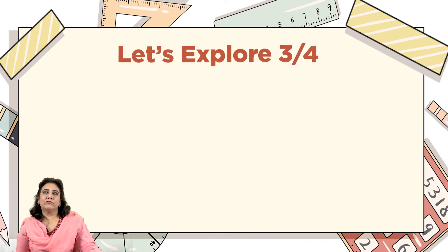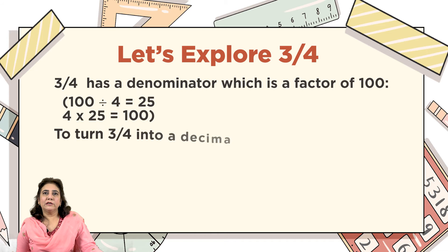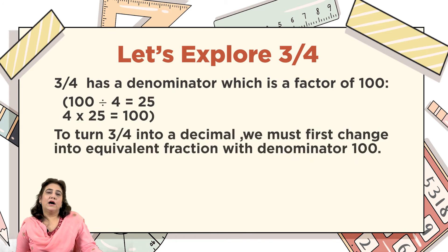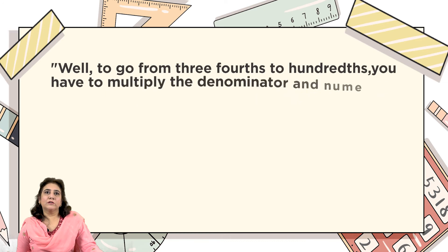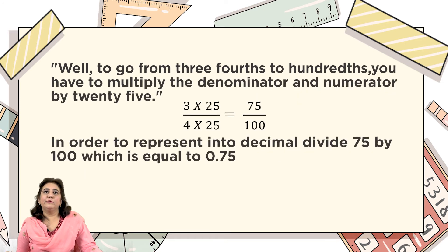Let's explore 3/4. Three-fourths has a denominator which is a factor of one hundred: one hundred divided by four equals twenty-five, and four multiplied by twenty-five equals one hundred. To turn 3/4 into a decimal, we must first change it into an equivalent fraction with denominator one hundred. Multiply both numerator and denominator by twenty-five: three times twenty-five and four times twenty-five equals 75/100. Divide seventy-five by one hundred, which equals 0.75.